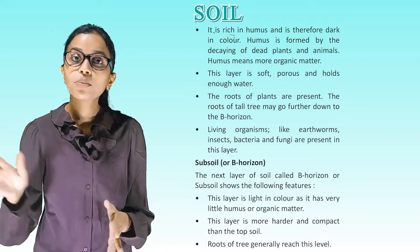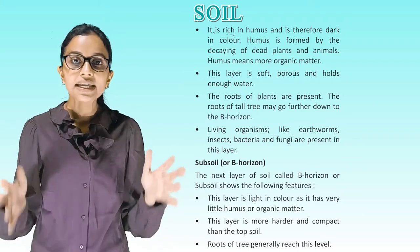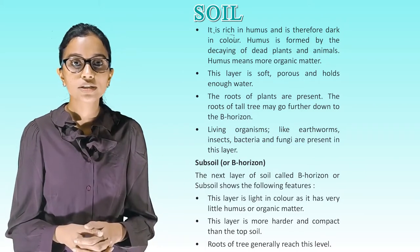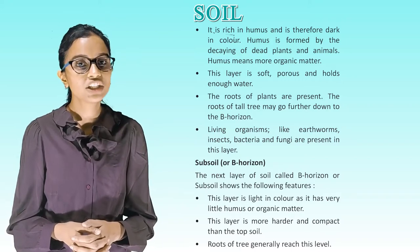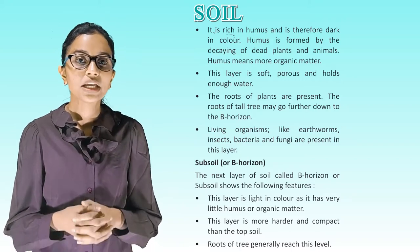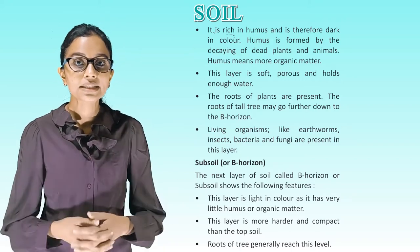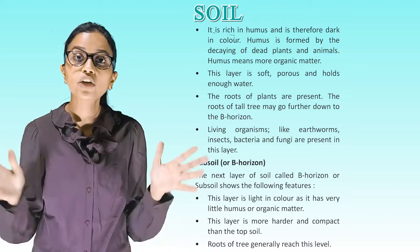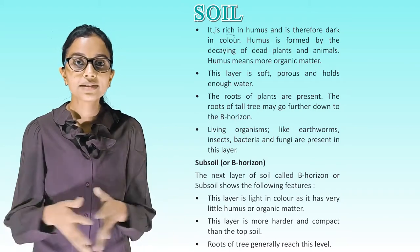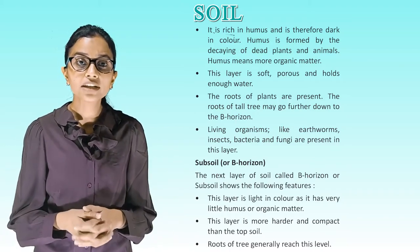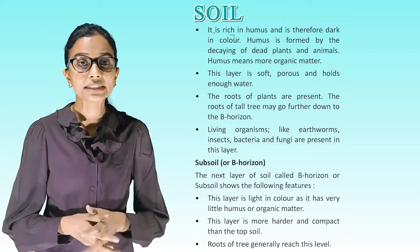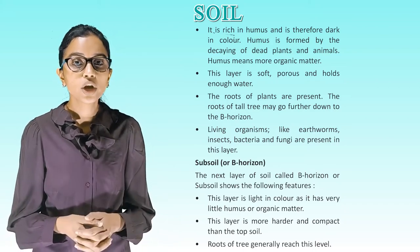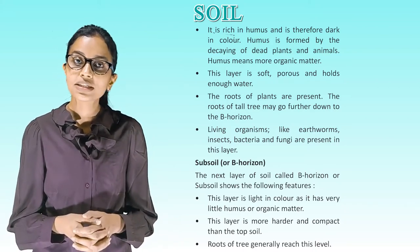Subsoil or B horizon: The next layer called B horizon or subsoil is light in color as it has very little humus or organic matter. This layer is harder and more compact than the topsoil. Roots of trees generally reach this level.